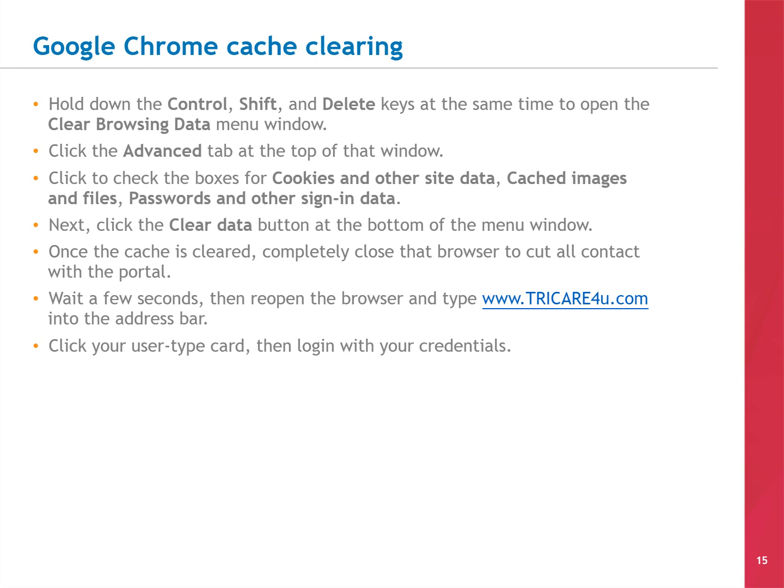Now let's look at how to clear the cache in a Google Chrome browser. Start by holding down the CTRL, SHIFT, and DELETE keys at the same time to open the CLEAR BROWSING DATA menu window. Click the ADVANCED tab at the top of that window. Check the boxes for Cookies and Other Site Data, Cached Images and Files, and Passwords and Other Sign-In Data. Click the CLEAR DATA button at the bottom of the menu. Once the cache is cleared, completely close the Chrome browser — not just that one tab. Wait a few seconds, then reopen the browser and type www.tricare4u.com into the address bar. Click your USER TYPE card, then log in with your credentials.